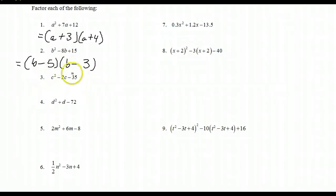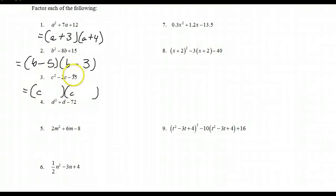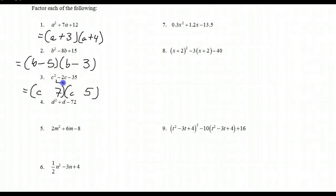This time we have a minus 35, which tells me the factorization has a c in it. The only way to get c squared is to have a c in each factor. We need two numbers that multiply to 35 and add to negative 2 — so they differ by 2. Those two numbers are 7 and 5. Since the product is negative, one is negative and one is positive, and the sign of the middle term tells us the larger number must be negative. FOIL check: c squared plus 5c minus 7c gives minus 2c minus 35.